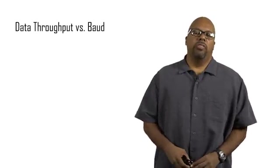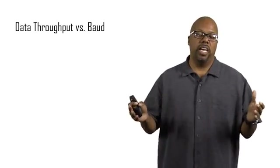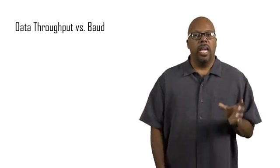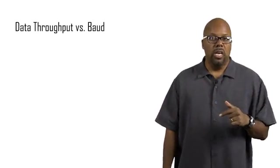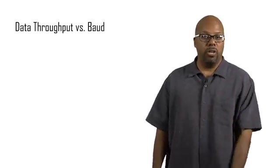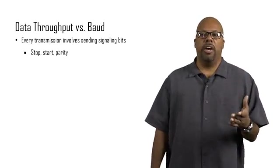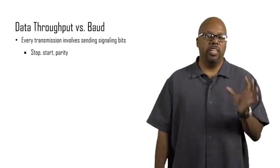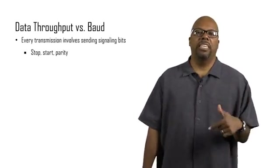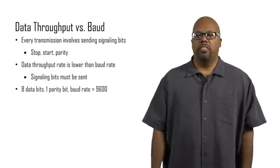Data throughput versus baud. The baud rate is the maximum number of transitions in a second, the maximum rate of transitions, which is the maximum bits that you can send. You can send that many bits, but not all of those bits are actually data bits. The data throughput is not as high as the baud rate, because you're sending the stop bit, the start bit, and the parity bit. You're sending this extra stuff that is not actually data. So the data transmission rate is going to be less than the baud rate.